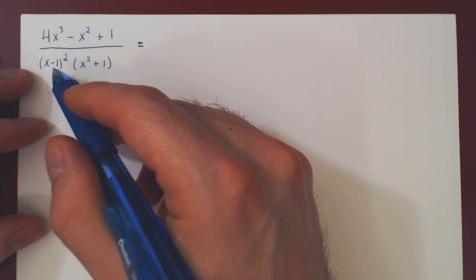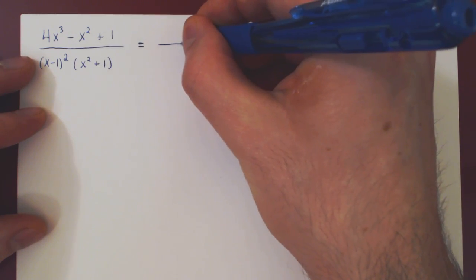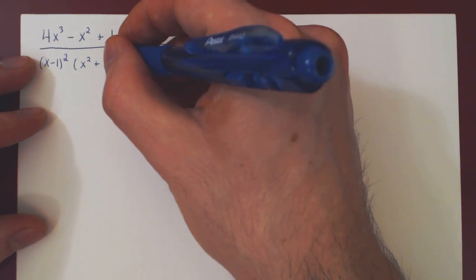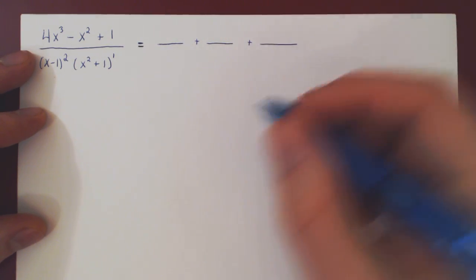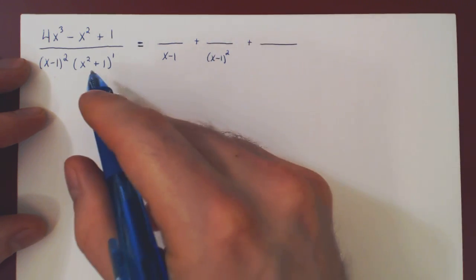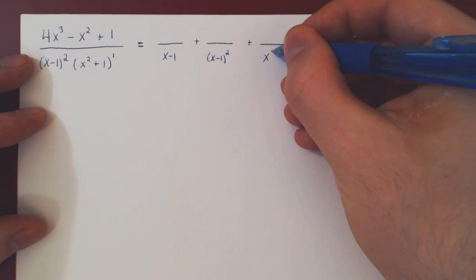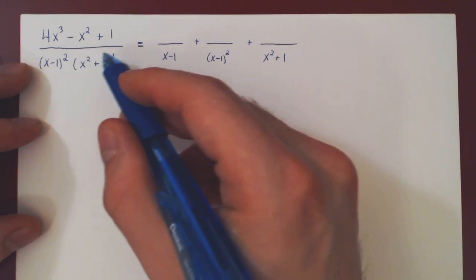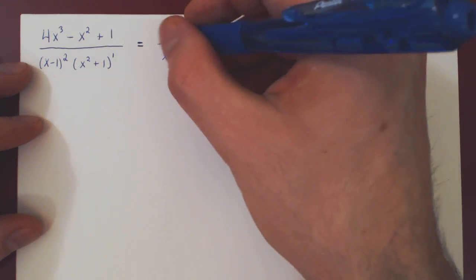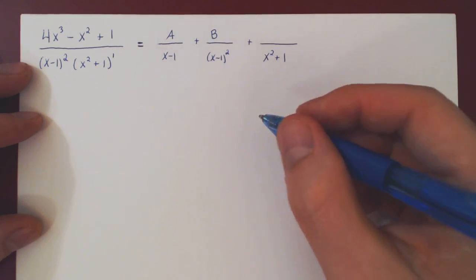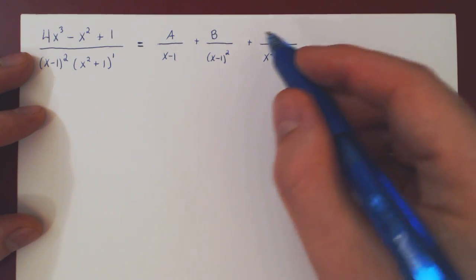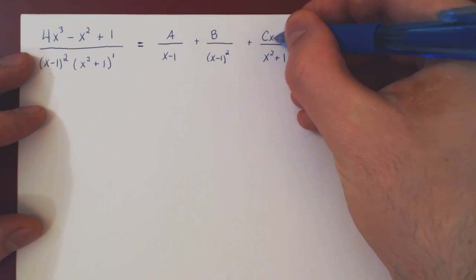We look first at the terms. We have x minus 1 with an exponent of 2 — this will return two partial fractions. The x squared plus 1 is an irreducible quadratic, but it has an exponent of 1, so it will return a single partial fraction. The x minus 1 squared returns denominators of x minus 1 and x minus 1 squared. For the irreducible quadratic, it's simply x squared plus 1. For the numerator, we ignore the exponents. Since x minus 1 is a linear factor, the numerator for each partial fraction originating from it is a constant — say a and b. For the third partial fraction, originating from an irreducible quadratic, the numerator is a linear polynomial: a multiple of x plus a constant.